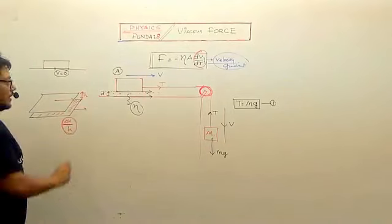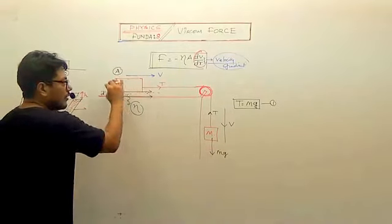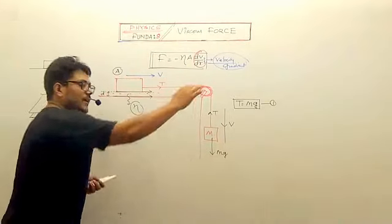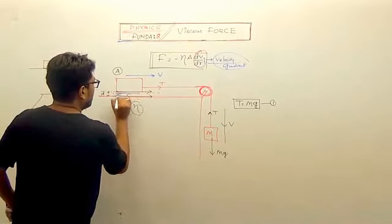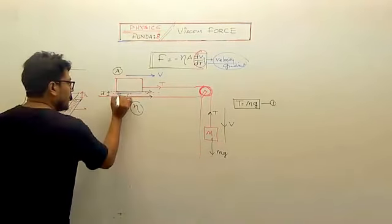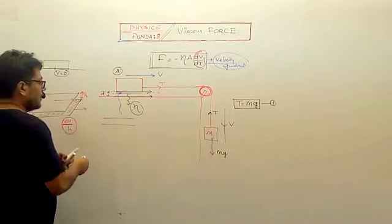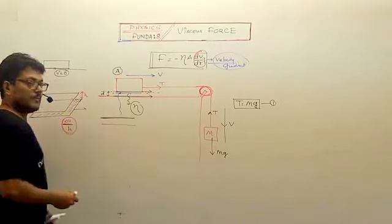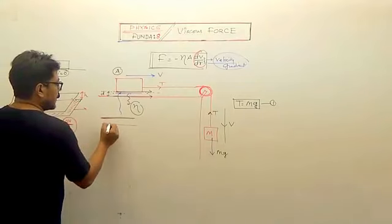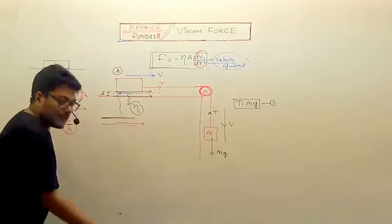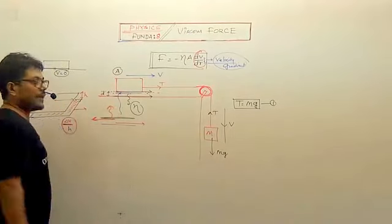Here viscous force will come. The block is moving, so there are two layers. The layer with the block will move with it, but the immediately next layer was stationary initially. Between these layers there is relative motion, so a backward viscous force will act on the surface, which will finally act on the block.